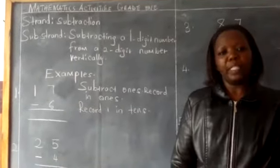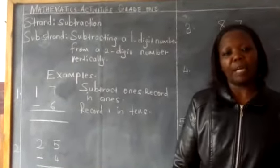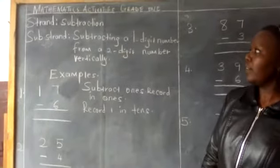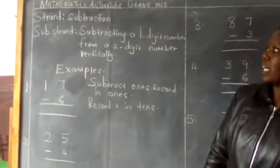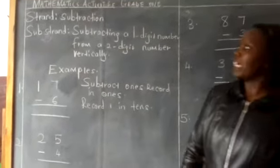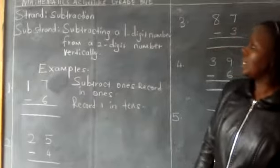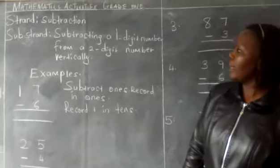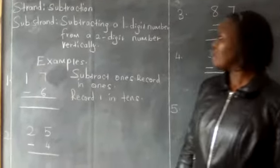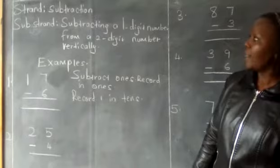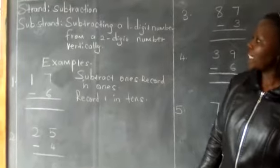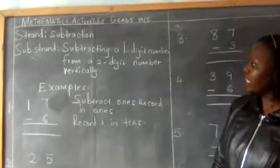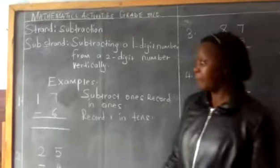Hello, good one people. Welcome to our mathematics activity lesson today. Our strand being subtraction — subtracting a one-digit number from a two-digit number vertically. Subtracting a one-digit number from a two-digit number vertically.